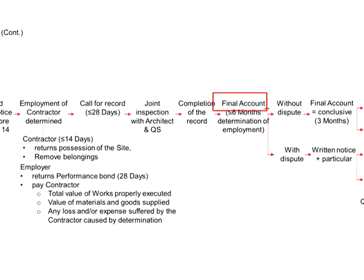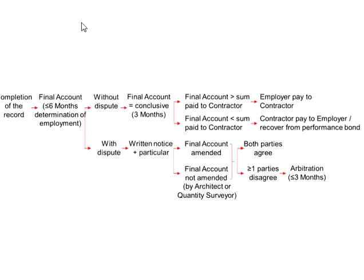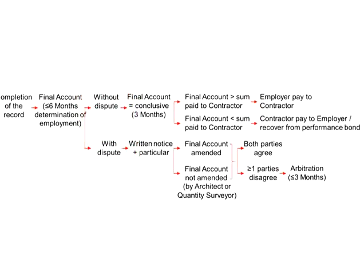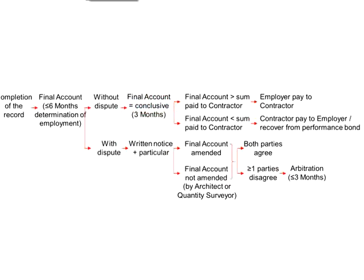Then, this final account will be disclosed to the employer, architect, and quantity surveyor. It will be up to the employer whether to trigger a dispute or not. If the employer agrees with the final account produced by the contractor, there is no dispute. And if the employer remains silent for three months, the final account is considered conclusive — deemed agreed by the employer — and the final figure shall be settled.